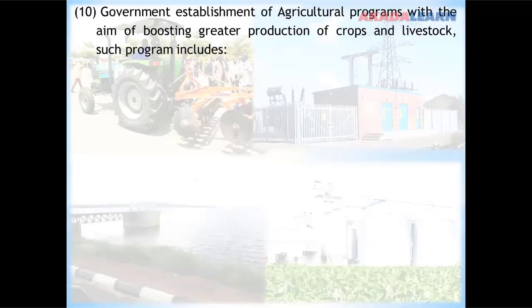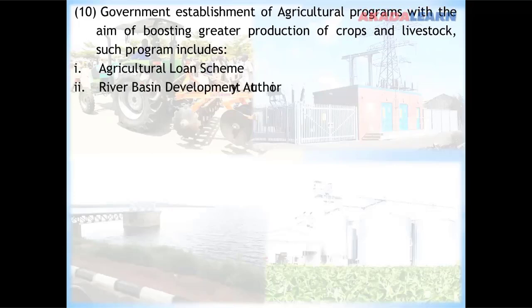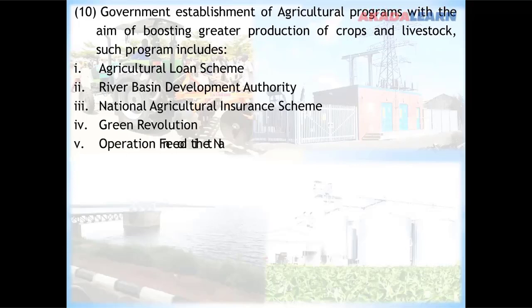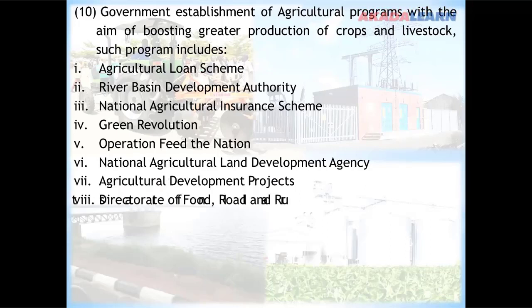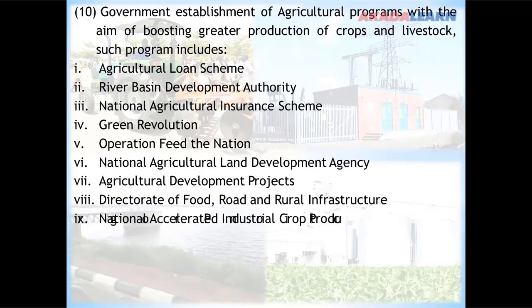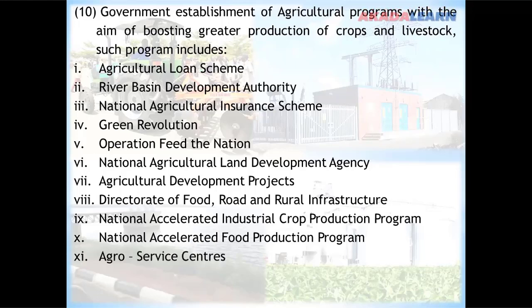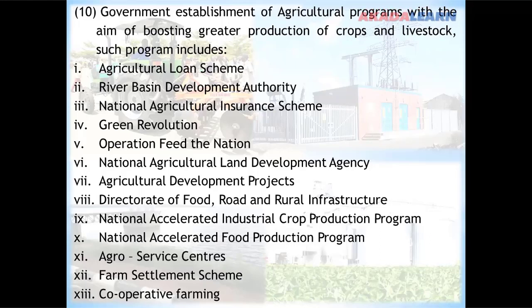Government has also established agricultural programs with the aim of boosting greater production of crops and livestock. Such programs include: Agricultural Loan Scheme, River Basin Development Authority, National Agricultural Insurance Scheme, Green Revolution, Operation Feed the Nation, National Agricultural Land Development Agency, Agricultural Development Projects, Directorate of Food Road and Rural Infrastructure, National Accelerated Industrial Crop Production Program, National Accelerated Food Production Program, Agro Service Centers, Farm Settlement Scheme, and Cooperative Farming. We will now look at some of these programs one by one.